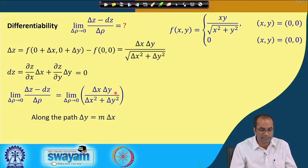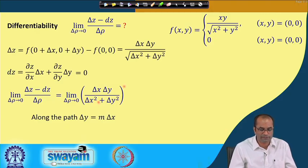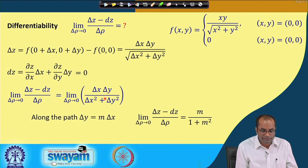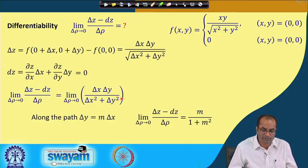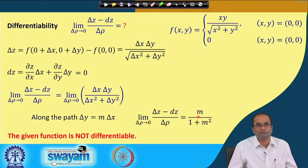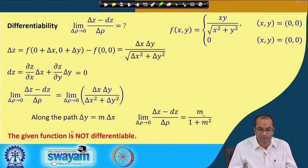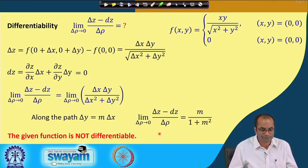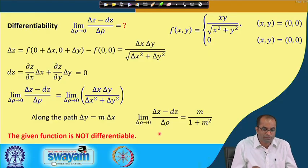Taking the path δy = m·δx to approach the origin, the limit gives m/(1+m²), which depends on m. Since the limit depends on the path, the limit does not exist. For differentiability this limit must equal 0, but it does not — hence the function is not differentiable. This confirms that continuity and existence of partial derivatives do not guarantee differentiability.